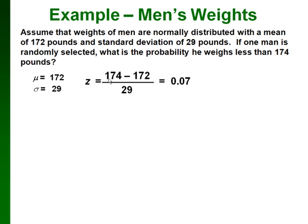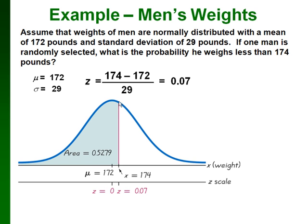Notice that our x value always goes first here. So we're taking x minus the mean divided by the standard deviation, we get 0.07.